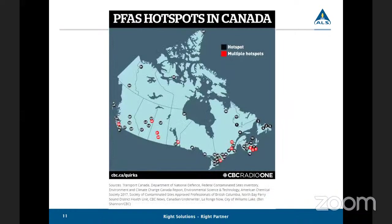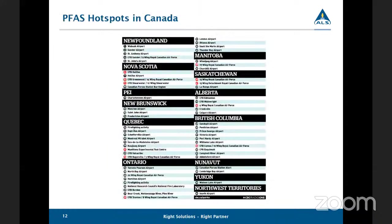This map shows an overview of some of the hotspots that we find in Canada. If you look at the list of these hotspots, most are actually associated with airports or Canadian forest spaces where AFFF has been used.